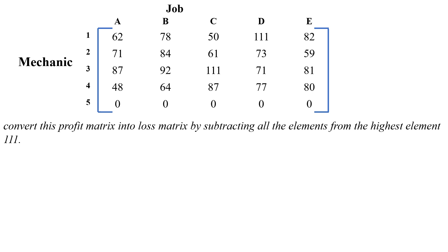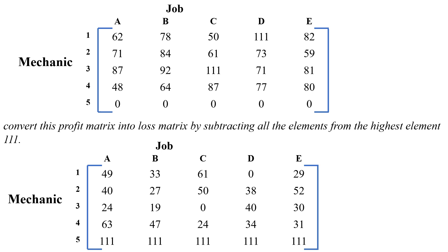The given problem is a maximization case, so we have to convert it into a minimization problem. For this, we convert the profit matrix into a loss matrix by subtracting all elements from the highest element, which is 111. After subtracting all elements from 111, the matrix becomes the loss matrix.